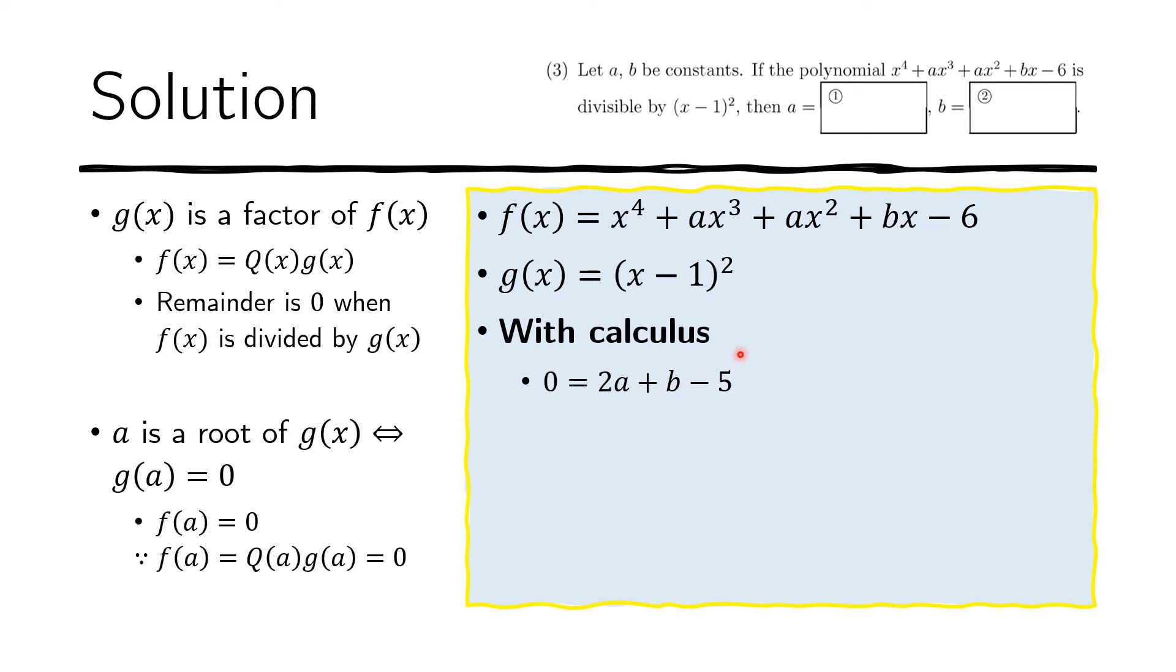So my idea is to actually get the derivative. And if we get the derivative of this equation here, if we get the derivative, we find we get a new equation that should still hold. So let's do that. So if we get the derivative of this, we get F of X, F prime of X on the left and on the right, we get Q prime of X times X minus one squared.